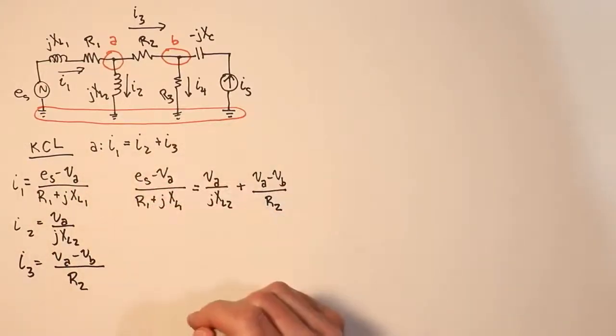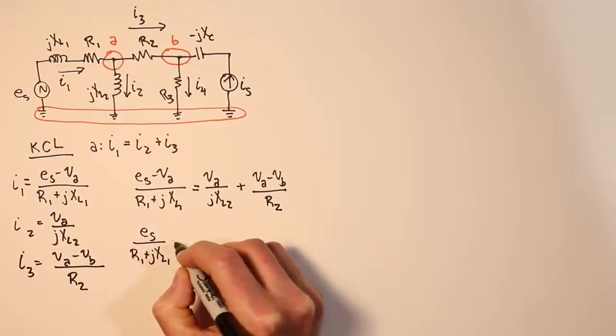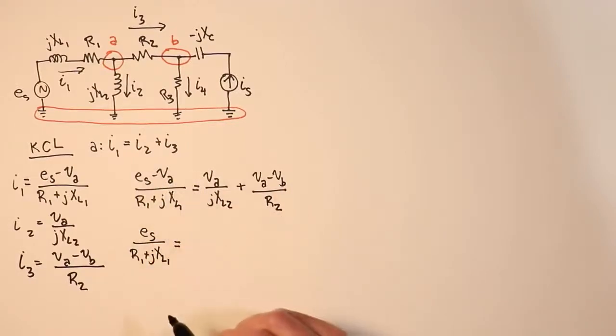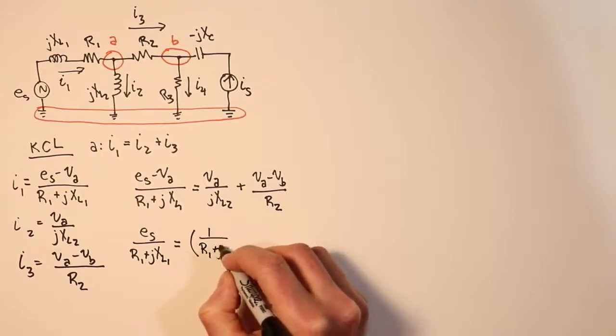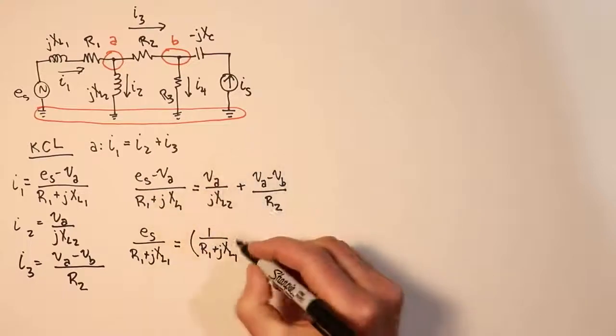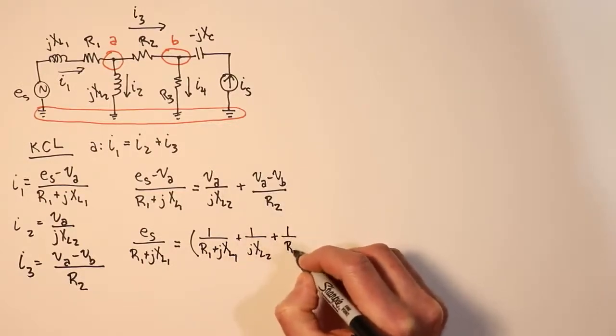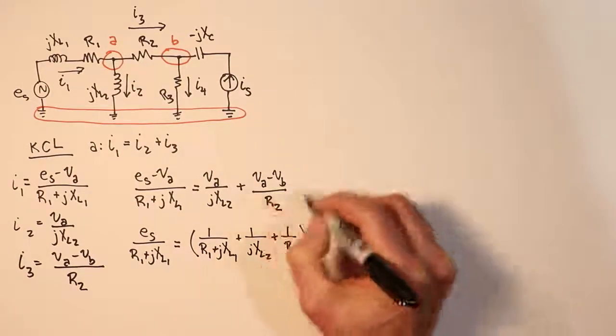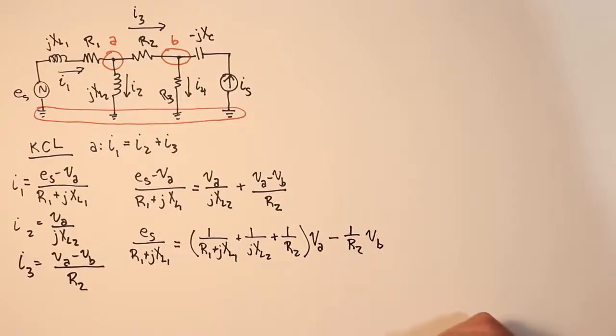So the constant we have over here is going to be ES over R1 plus JXL1. Now, VA coefficients. I got this negative VA over R1 plus JXL1, so on this side of the equal sign, that's going to turn into 1 over R1 plus JXL1, and then I have this term here, 1 over JXL2, and then finally we have another one over here, 1 over R2. All of those things are multiplied by VA. And I have one more term, which is this negative VB term. If you were going to solve something like this, obviously we're going to go through and put the numbers in here and simplify these so that we have a single value for this, and a single value for this coefficient, and so on.